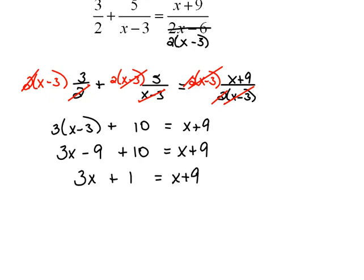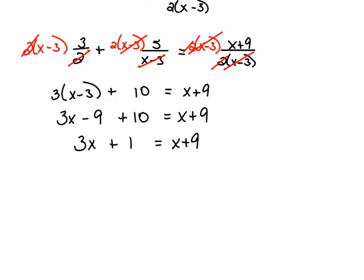Now, I'm going to do this in one step here. Let's subtract x from both sides, so that we'll remove it from this side. So, 3x minus x will be 2x, and then let's move our 1 over here to the right. So, we'll subtract 1 from both sides.